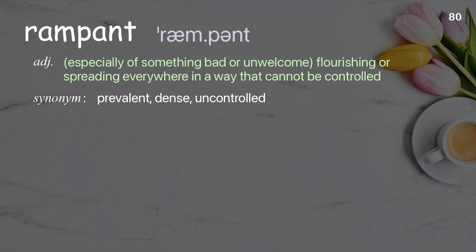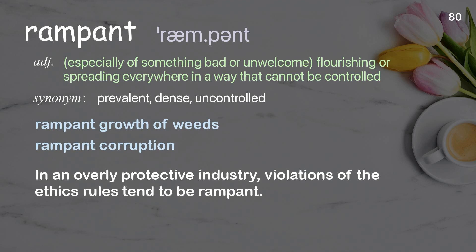Rampant: especially of something bad or unwelcome, flourishing or spreading everywhere in a way that cannot be controlled. Examples: rampant growth of weeds, rampant corruption. In an overly protective industry, violations of the ethics rules tend to be rampant.